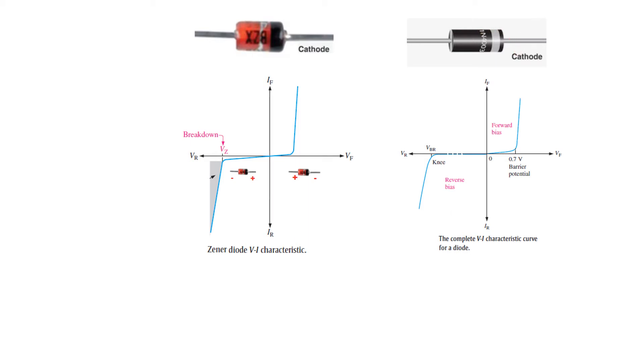But in case of a Zener diode, if we keep on applying the reverse bias, at one point it will also break down but when we reduce this voltage it will come back alive and it will not be damaged. So that is the difference between the two.